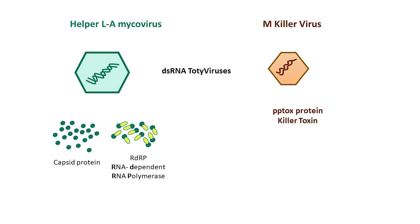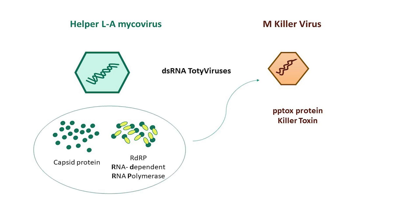In contrast, the genome of the M killer mycovirus encodes only one protein, PPtox, namely the killer toxin. It lacks the necessary genes for encapsidation and replication. Instead, it relies on the capsid proteins and polymerase from the LA mycovirus.